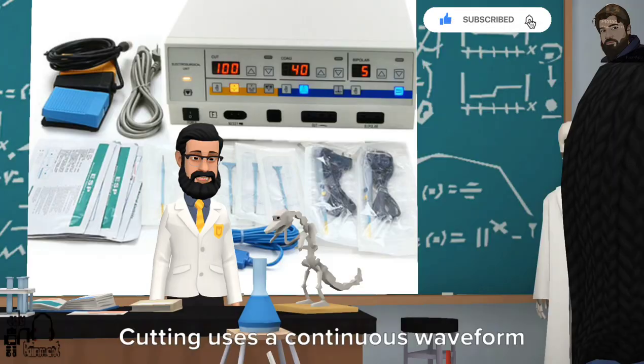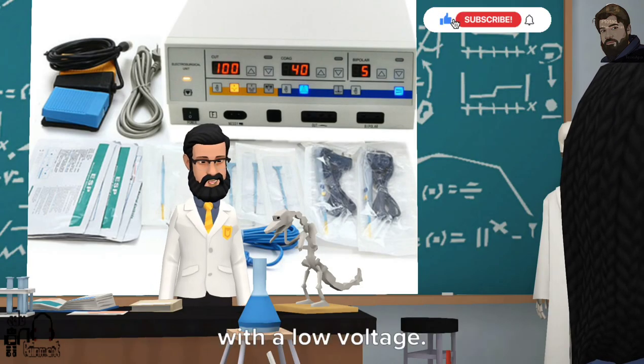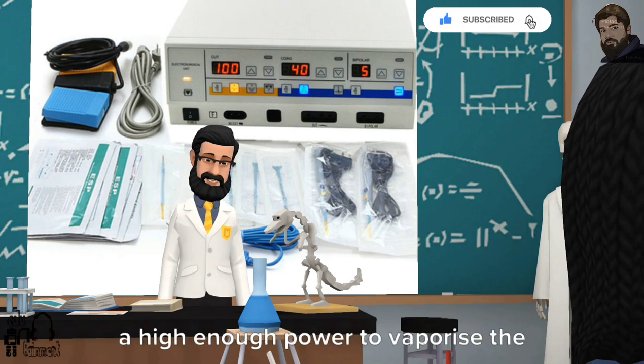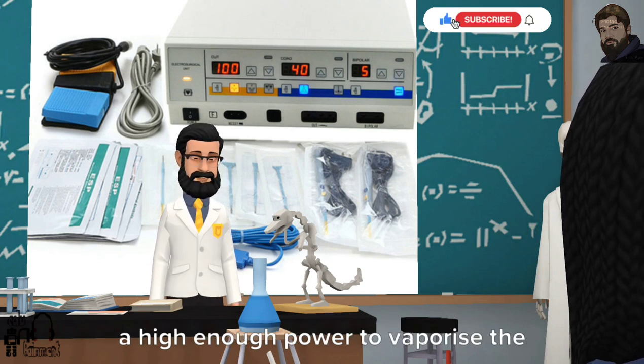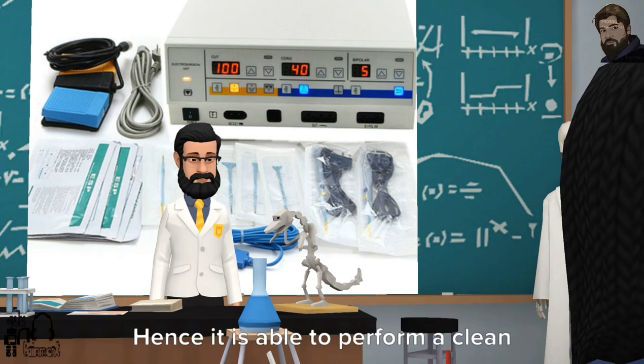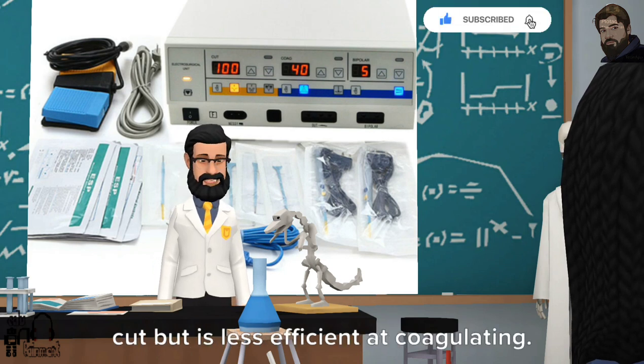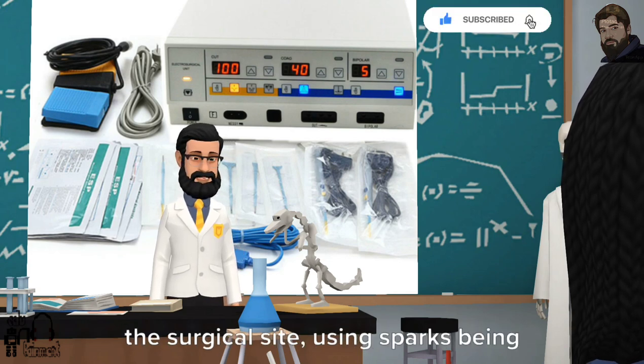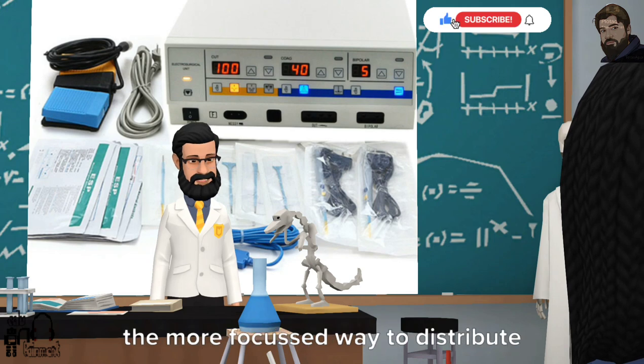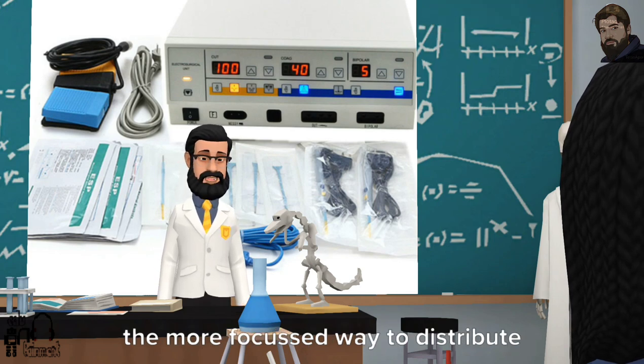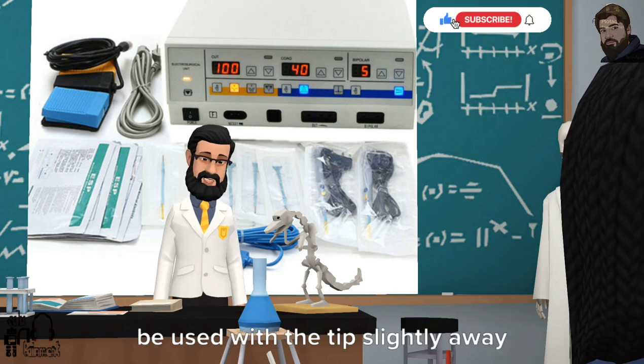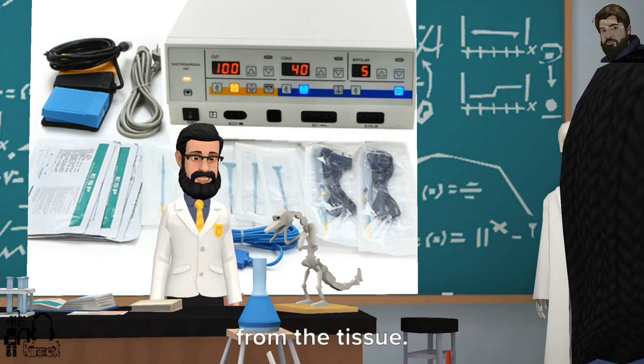What is cutting? Cutting uses a continuous waveform with a low voltage. In cutting mode, the electrode reaches a high enough power to vaporize the water content. Hence it is able to perform a clean cut but is less efficient at coagulating. The cutting mode focuses heat at the surgical site using sparks being the more focused way to distribute heat. The cutting mode should therefore be used with the tip slightly away from the tissue.